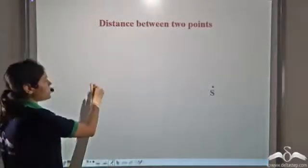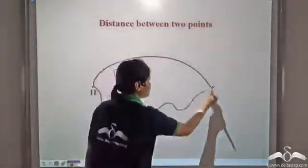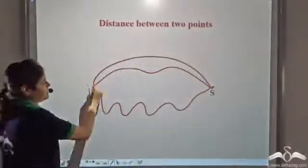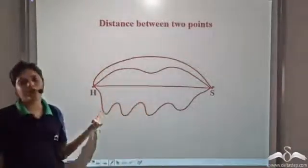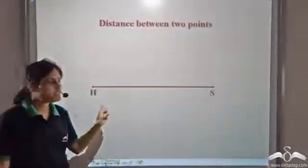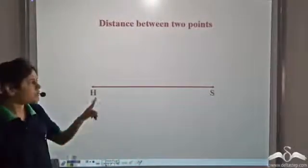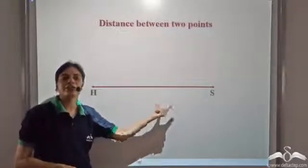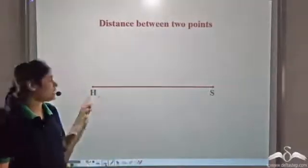There can be many possible paths between point H and point S. This is one path, this could be another path, this could be another path — so what should we take as the distance between H and S? There could be many more possibilities. We take the line segment joining point H and point S as the distance between these two points. The length of this line segment gives the distance between H and S. It is also the shortest path between H and S.